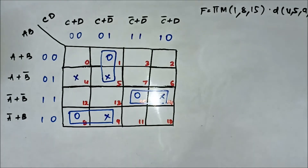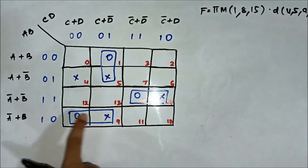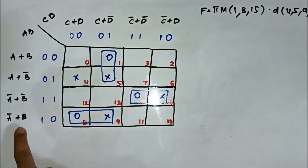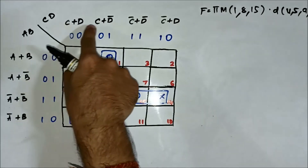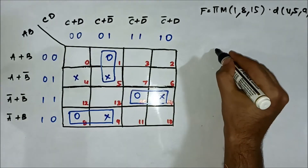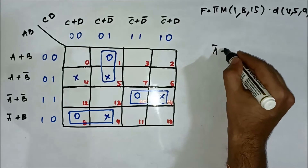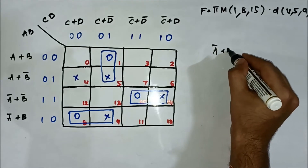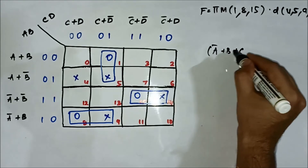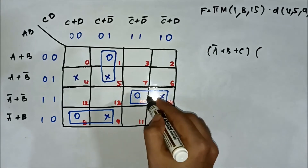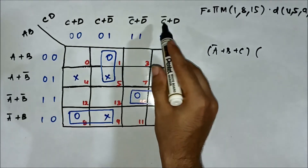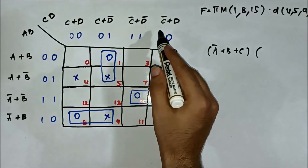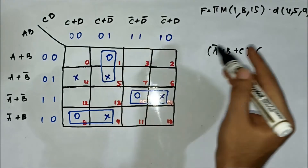Now we have to identify the common variables. For the pair (1, 5): A̅ or B is common on the horizontal side and C is common on the vertical side, so it gives A̅+B+C. For the pair (14, 15): A̅+B̅ on the horizontal side and C̅ on the vertical side.